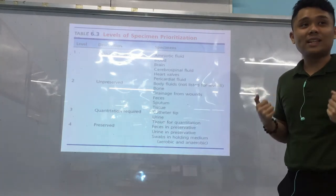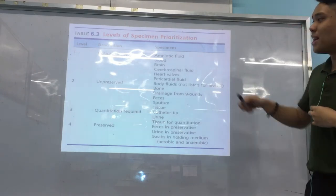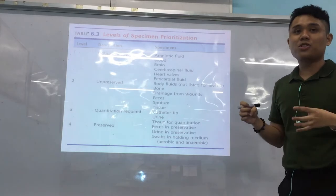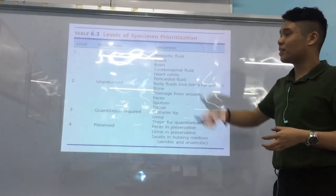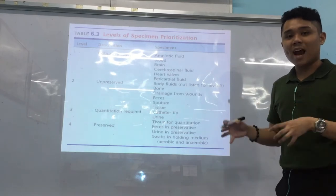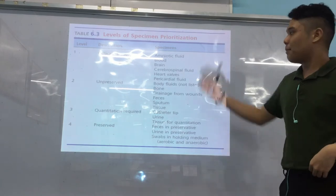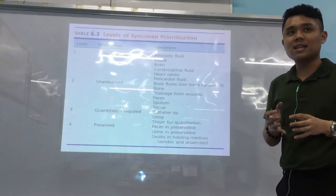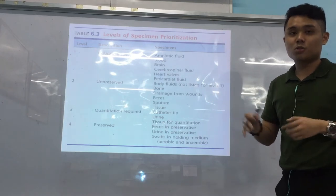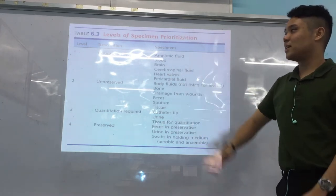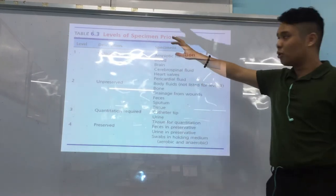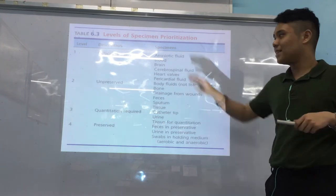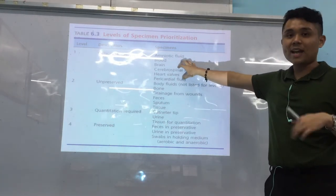The first priority level is critical or invasive specimens — those that may contain organisms or pathogens that can be life-threatening. Examples: amniotic fluid — organisms there could lead to miscarriage, death of the mother and baby — blood, brain, CSF, heart valves, pericardium. These specimens come from vital organs; if there's a pathogen there, it can be fatal.